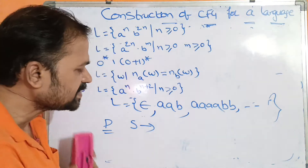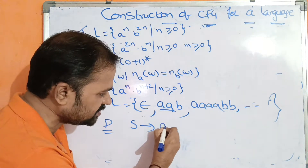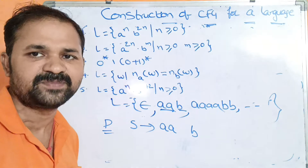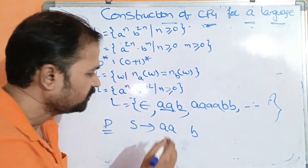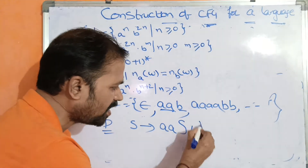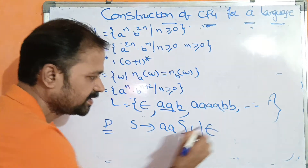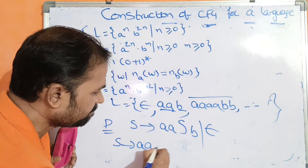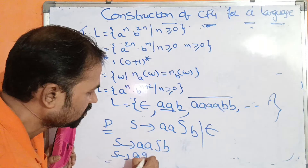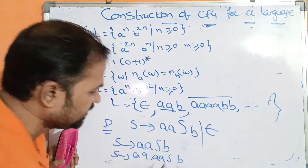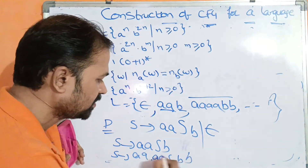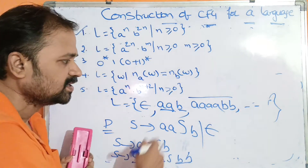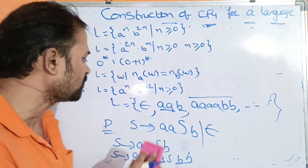Let us write the production rule P. S implies: the minimum string starts with A, A and ends with B. In between A A and B, we can have any number of A's and B's by calling S recursively: S → A A S B. The minimum string (0 occurrences) is epsilon — so S → epsilon. Deriving 4A 4B: S → A A S B → A A [A A S B] B → A A A A [epsilon] B B → 4A 4B. Our production rules are correct.